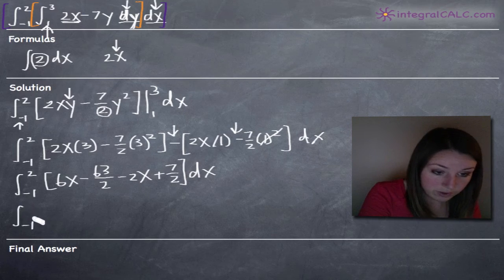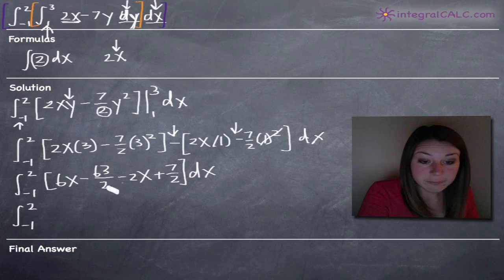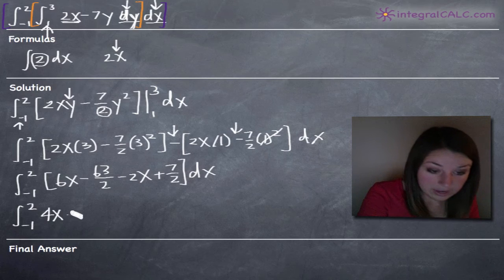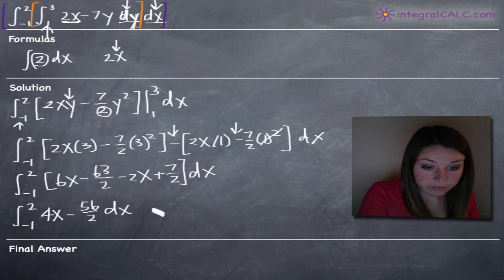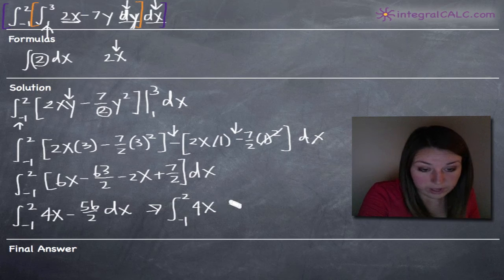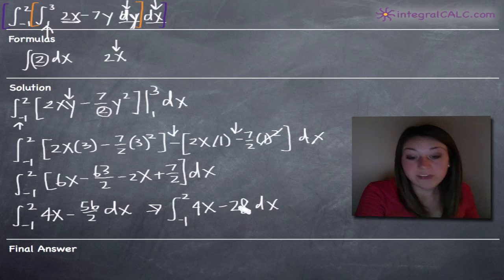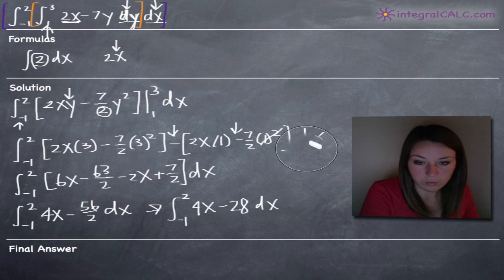Simplifying by combining like terms: 6x minus 2x gives us 4x. Negative 63 halves plus 7 halves gives us negative 56 halves, which simplifies to negative 28. So the inner integral simplifies to 4x minus 28 dx. We could factor out a 4 to get 4 times (x minus 7), but it doesn't buy us much, so we'll leave it.